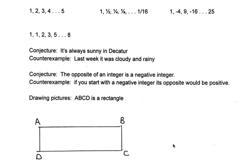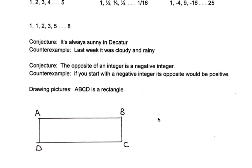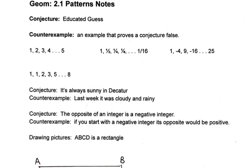We'll also have some things where we talk about drawing pictures. If it says ABCD is a rectangle, you draw yourself a rectangle and label it ABCD. Note that ABCD goes around the horn just as you're drawing it — you follow that pattern. You can't go A, B, and then put your C and D out of order; that doesn't work with what you've been told. All right, we are done here. Talk to you later, bye.